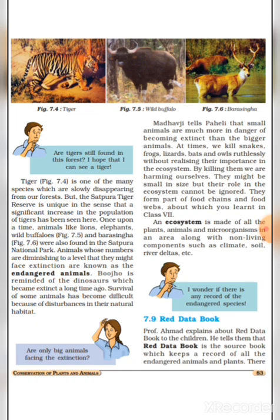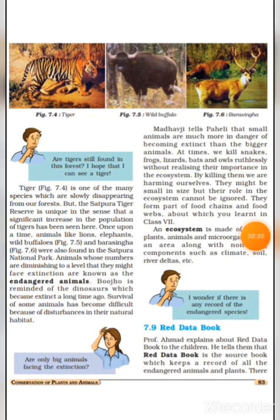Satpura National Park mein Sher, Haathi, Jungli bhai evam Barasingha bhi paye jaate the, jinhein hum upar wale diagrams mein dekh sakte hain. Jo 7.6 mein dikhaya gaya hai, woh Barasingha hai.